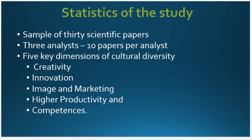Regarding the statistics of the study, they chose 30 scientific papers. It would be interesting to know why only 30 and whether that was a good sample. The papers were divided among three analysts, 10 papers per analyst. Everything was broken into five key dimensions of cultural diversity: creativity, innovation, image and marketing, higher productivity, and competencies. It was not entirely clear to me why these five key dimensions were chosen, but nevertheless this was a very nicely written piece.